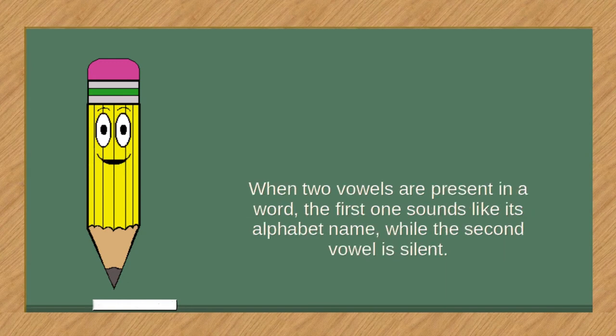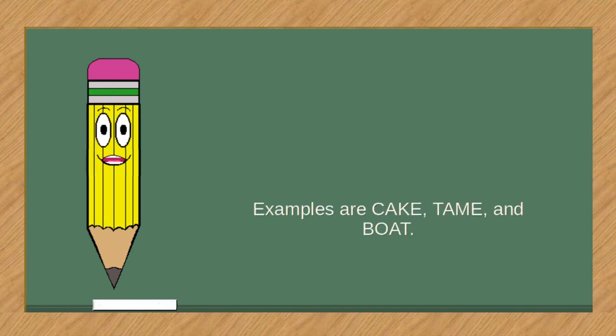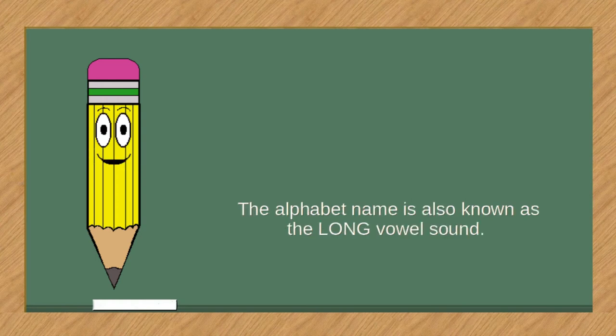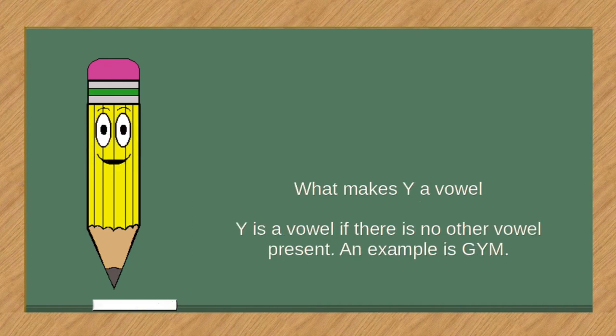When two vowels are present in a word, the first one sounds like its alphabet name, while the second vowel is silent. The alphabet name is also known as the long vowel sound.